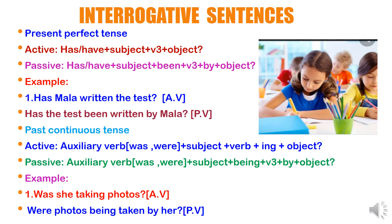Present perfect tense in interrogative sentence. In active voice: has/have plus subject plus V3 plus object. In passive voice: has/have plus subject plus 'been' plus V3 plus 'by' plus object. Example: 'Has Mala written the test?' becomes 'Has the test been written by Mala?' — 'has' because 'test' is singular. 'Test' becomes the subject. 'Been' is written as it is. 'Written' is V3. Mala is the object.